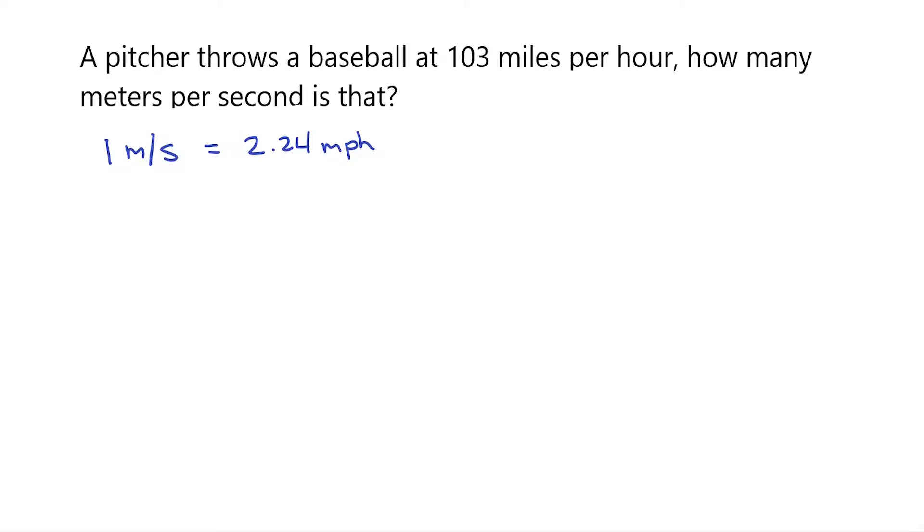Now let's create some fractions and figure out which one will help us solve this problem. So I could say that for every 1 meter per second, I have my 2.24 miles per hour. Or I could say that for every 2.24 miles per hour, I have my 1 meter per second.